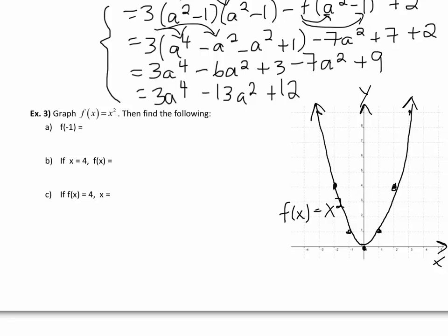To find the following: f(-1), we can plug it in like we have been, or we can just take a look at our graph. If we looked at f(-1), that would be x equals negative 1. And then if we read across, our corresponding y value is 1.